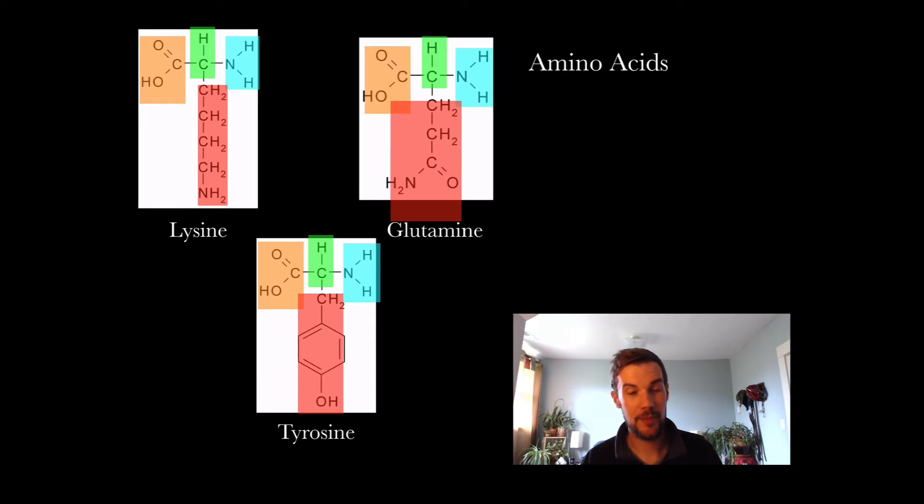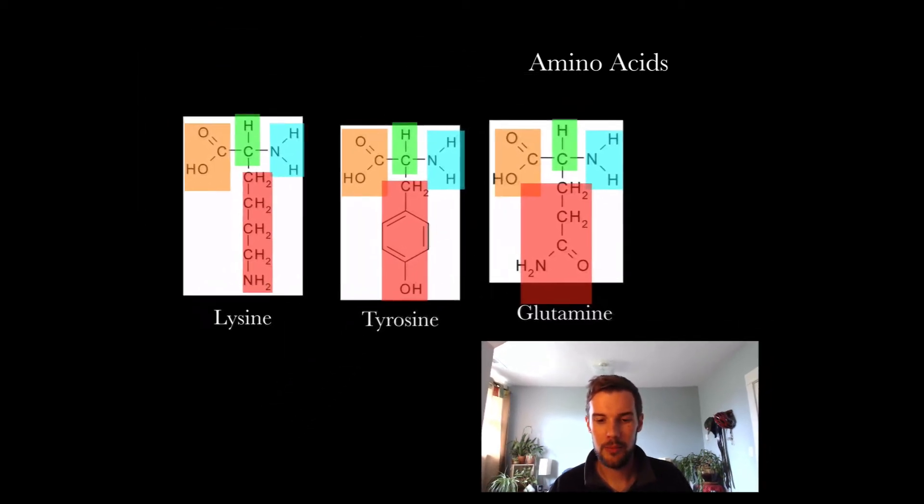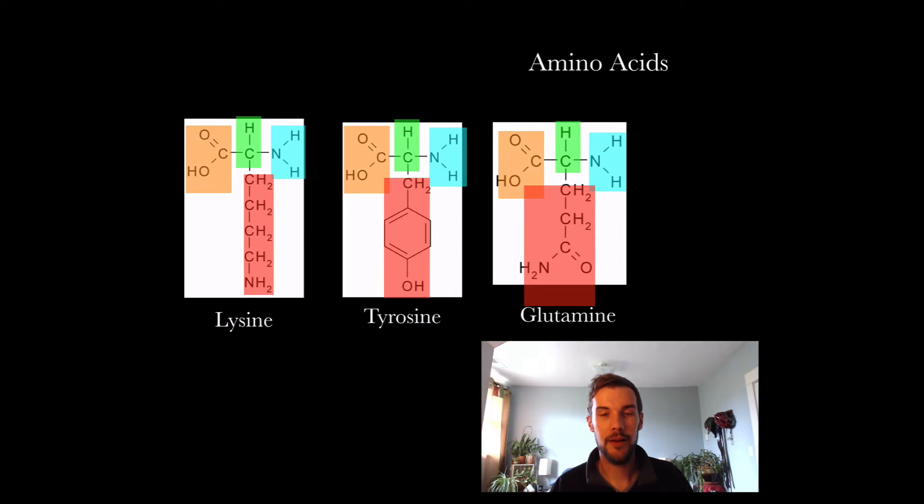These common amino acids—lysine, glutamine and tyrosine—will start to bond together. The primary structure of protein folding is just the bonds of the different amino acids together in a chain.